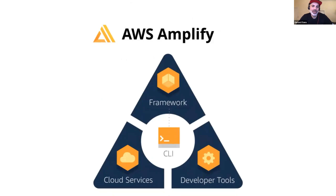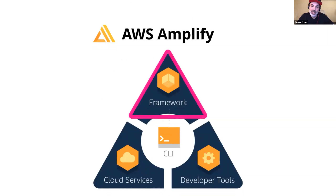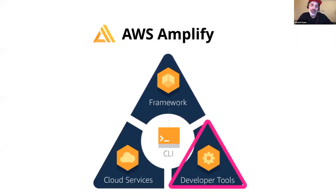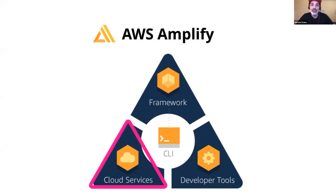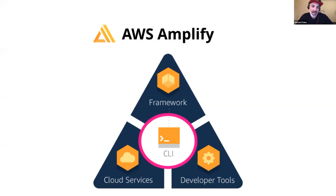If we look at AWS Amplify in more detail, we have different pieces playing together — you can use any piece separately or together to achieve full-stack serverless apps. There is the framework, a set of libraries for mobile and web platforms; developer tools to help you build during different stages of development; cloud services that integrate those features; and the Amplify CLI, which helps you scaffold, create, and provision services in the cloud. Amplify is bringing front-end and back-end together seamlessly.